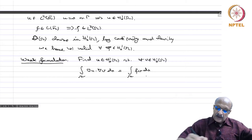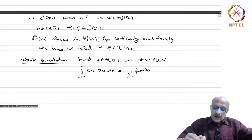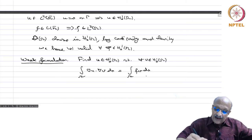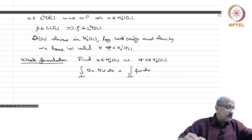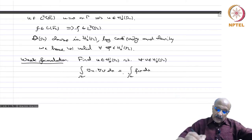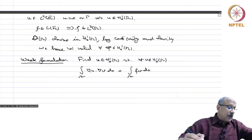This equation does not involve anything about second derivatives. We are looking at a function space involving only the function and its first distributional derivatives, and the formulation for every v in H^1_0(omega) does not involve any second derivatives at all. That is why we call this a weak formulation, and a solution satisfying it is called a weak solution.